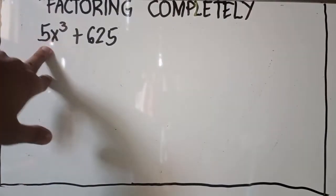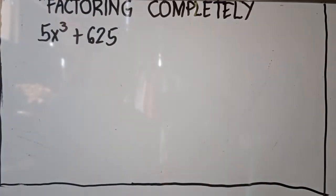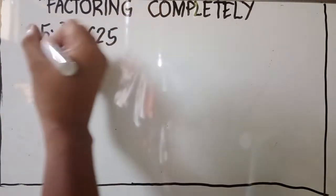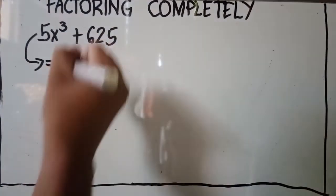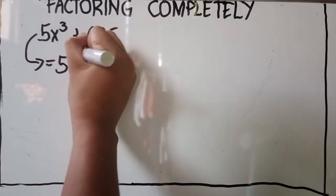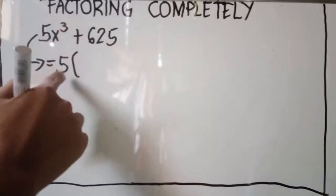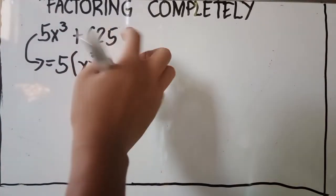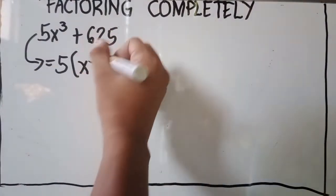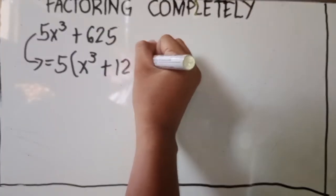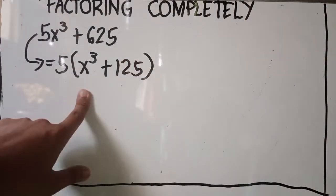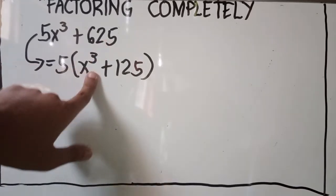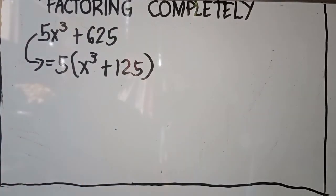5x³ is divisible by 5, and 625 is also divisible by 5. So we write 5, then factor out: 5x³ divided by 5 is x³, and 625 divided by 5 is 125. So we get 5(x³ + 125). Now, is this still factorable? Yes, of course.